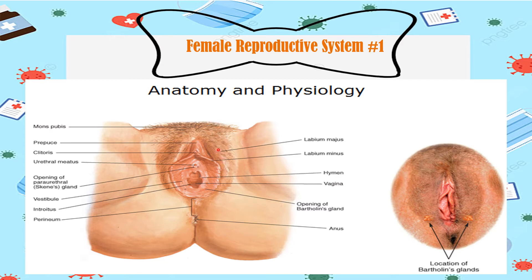The anatomy of the external female genitalia, or the vulva, includes the mons pubis — a hair-covered fat pad overlying the symphysis pubis — the labia majora, which are rounded folds of adipose tissue, and the labia minora, which are thinner pinkish-red folds that extend anteriorly to form the prepuce and the clitoris. The vestibule is a boat-shaped channel located between the labia minora, and in its posterior portion lies the vaginal opening. The introitus, in women who have never had intercourse, may be hidden by the hymen.